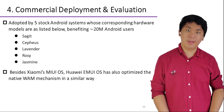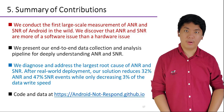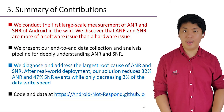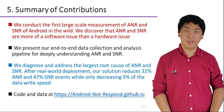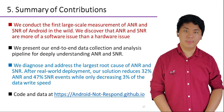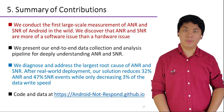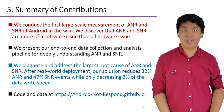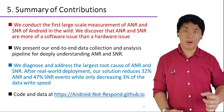Furthermore, we observed that other vendors such as Huawei have also adopted a similar scheme for performance optimizations. To conclude, our work's major contributions are: we conduct the first large-scale measurement of ANR and SNR of Android in the wild; we discover that ANR and SNR are more of a software issue than a hardware issue; we present an end-to-end data collection and analysis pipeline for deeply understanding ANR and SNR; we diagnose and address the largest root cause, reducing 32% ANR and 47% SNR events while only decreasing 3% of data write speed. We have also released our dataset and code in part to the community. Thank you.